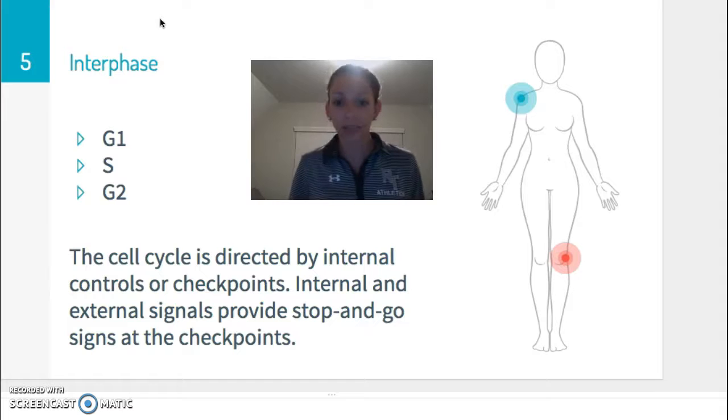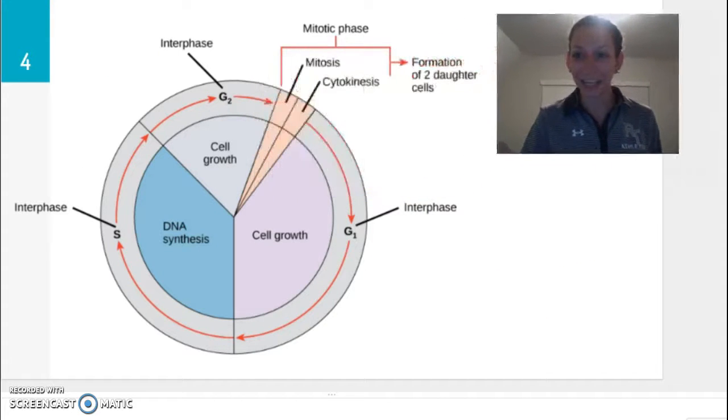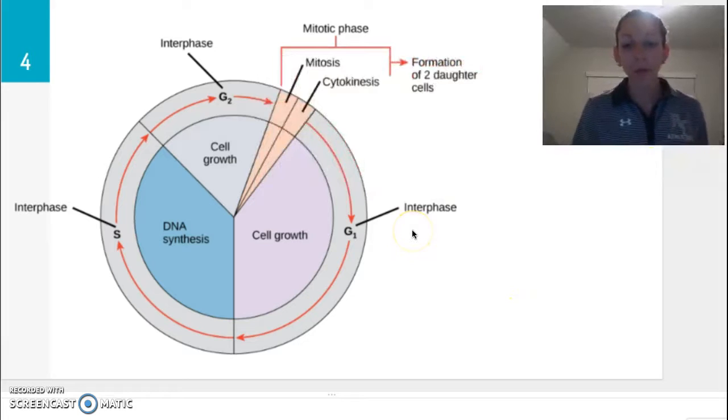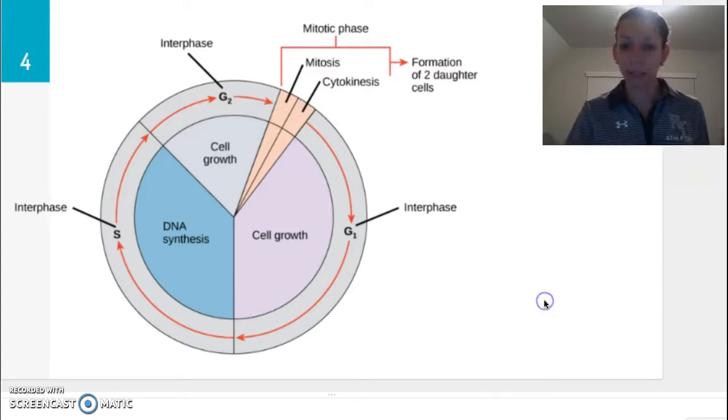So the cell cycle is directed by internal controls or checkpoints. Internal and external signals are going to provide stop and go signs at these checkpoints. So if we go back and look at our cell cycle right here, we see that we're going to have checkpoints before we can move on from G1 to S or from S to G2. And then finally, we'll talk about one in particular that is actually going to make sure that the cell does not move on from G2 into the mitotic phase until it is all ready to go.